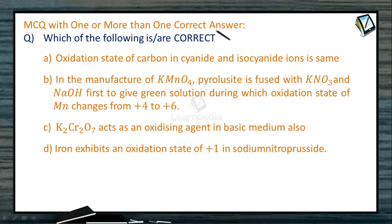MCQ with one or more than one correct answer. Which of the following is correct? Option A: Oxidation state of carbon in cyanide and isocyanide ions is same. Yes, it is right.